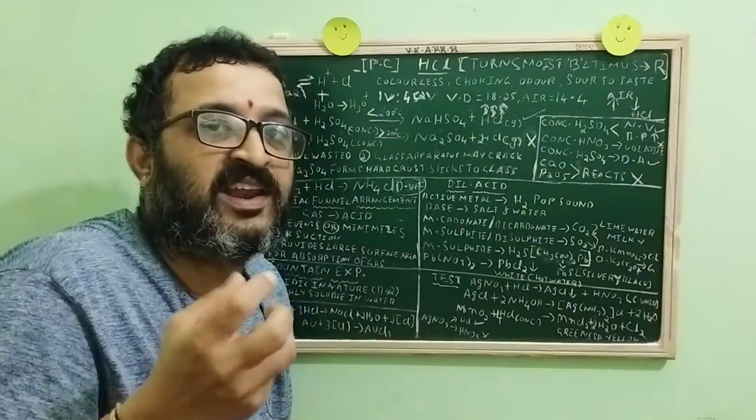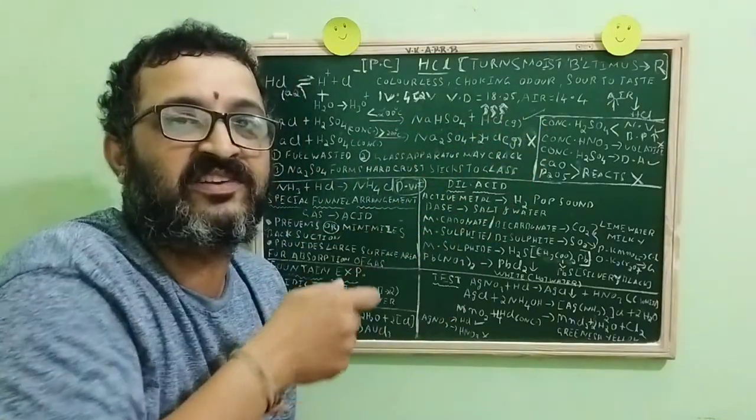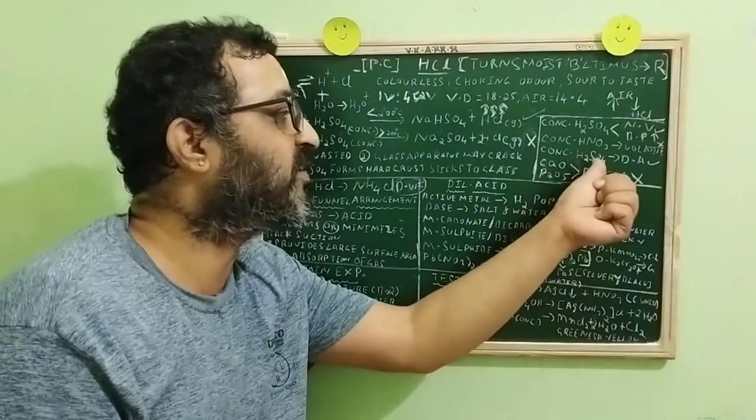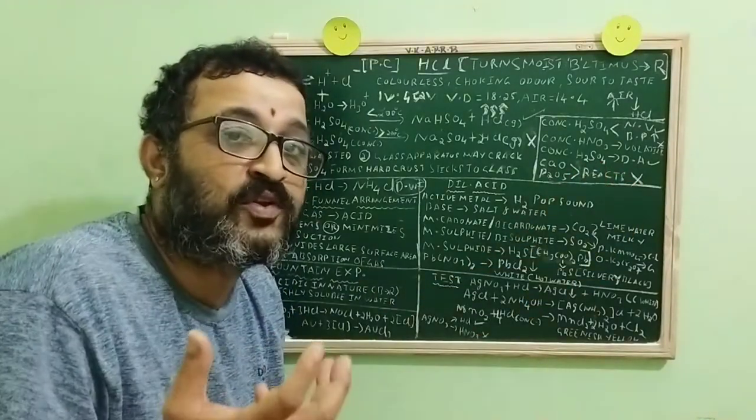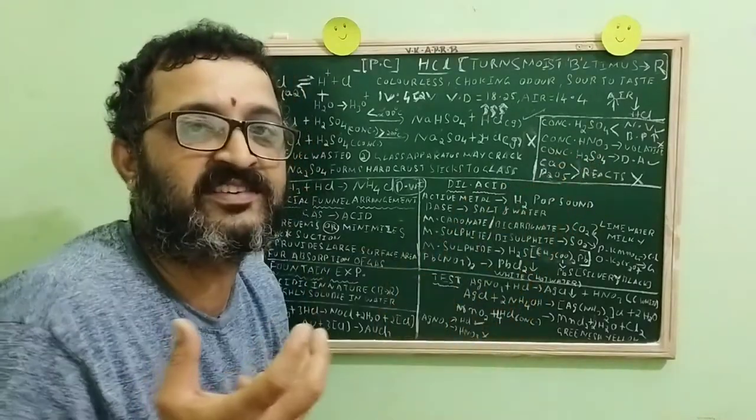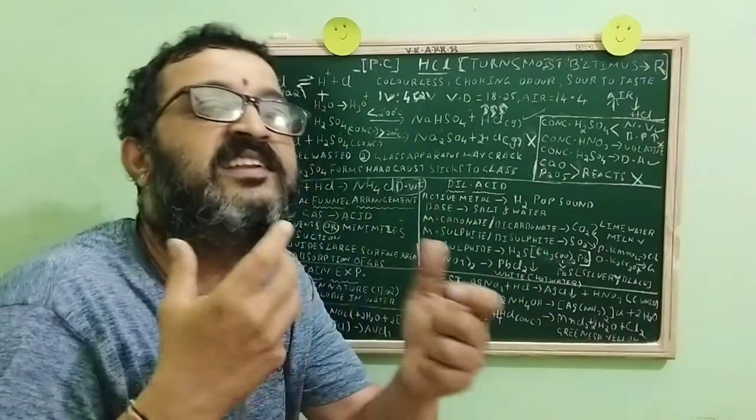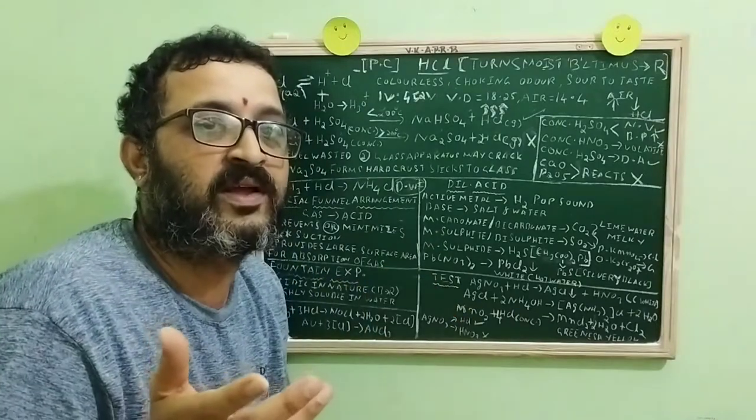Obviously, in the laboratory preparation of HCl, you want a drying agent. Which is the drying agent used? It is concentrated sulfuric acid. Why sulfuric acid is used? Because sulfuric acid is an acid. HCl is an acid. Acid acid. No reaction.